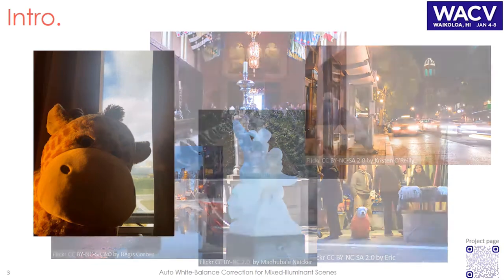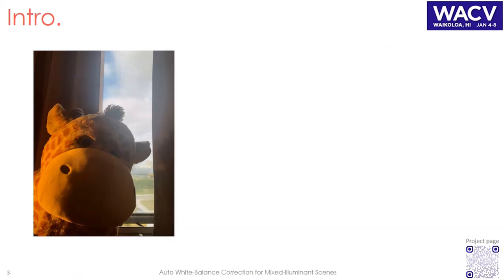Here we show a typical example of a scene captured with a mixed lighting condition. The captured scene has two different light sources: an outdoor light on the right and an indoor light on the left.